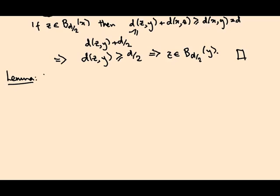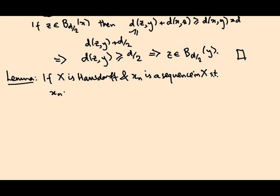First, if x is a Hausdorff topological space, and x_n is a sequence of points in x such that x_n converges to x and x_n converges to y for some points x and y, then x equals y. So there's a unique limit of a sequence in a Hausdorff space, which is good. Otherwise, how do we do anything? I haven't actually told you what convergence of sequences means in topological spaces, so that's the first thing I should really do.